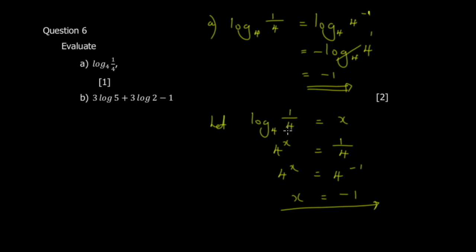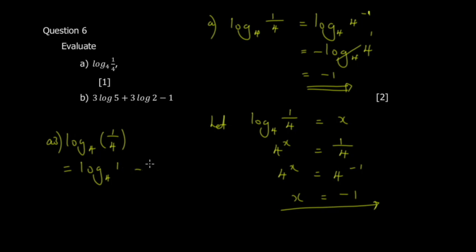A third option is to write one quarter as one over four, giving log base 4 of (1/4). Apply the quotient rule: log base 4 of 1 minus log base 4 of 4. Log base anything of 1 is always zero, and log base 4 of 4 is always 1. So zero minus one gives negative one.